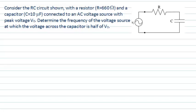This video will look at an AC circuit containing a resistor and a capacitor in series. In this particular question, we need to understand the nature of the circuit and what is being asked. In this case, it's a frequency we're trying to calculate — the frequency at which the voltage across the capacitor has a particular value, in this case half of the applied voltage.